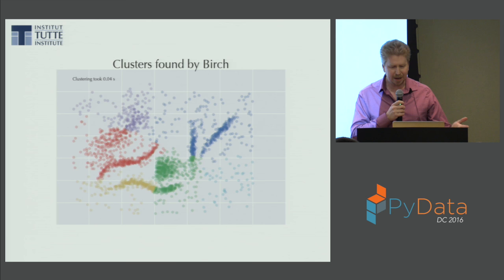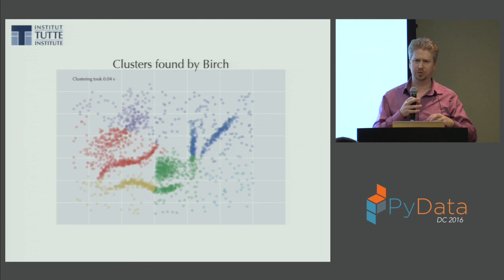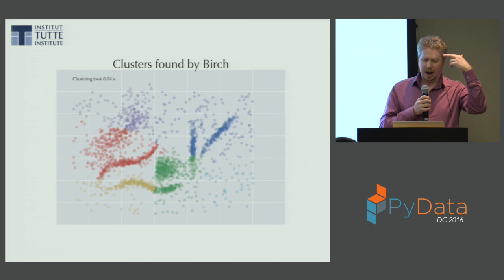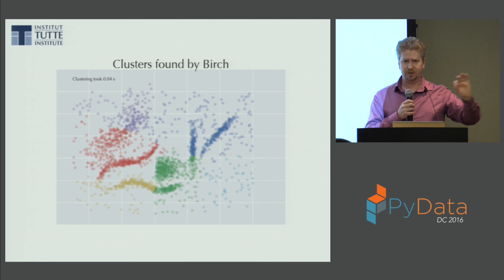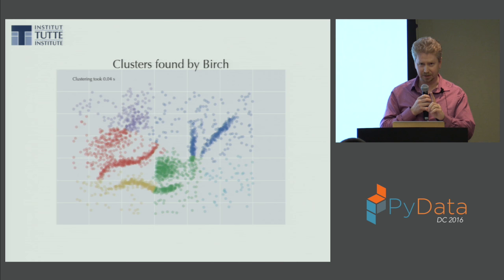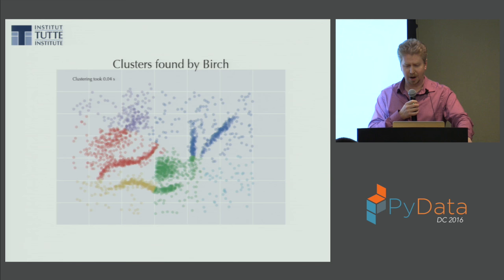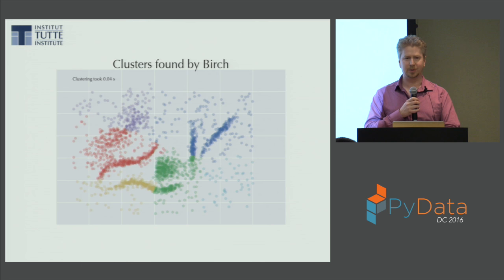BIRCH iteratively partitions your data into a cluster feature tree — think of it like a B-plus tree that dynamically grows. Once data is broken into trees, we look at the leaves, put tiny spherical cows around each leaf, then run another clustering algorithm — usually k-means — to cluster the spherical cows into large spherical cows. Advantages: it's fast, has low memory consumption, it's streaming, and you don't need to specify the number of clusters. It does have a parameter that's a little hard to tune. Enough of centroid-based clustering — there's a recurring theme of spherical cows.